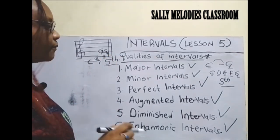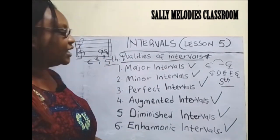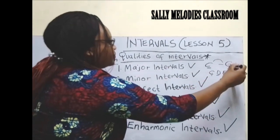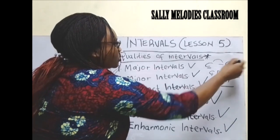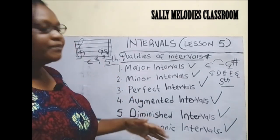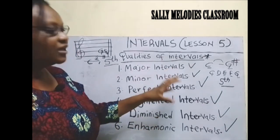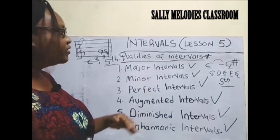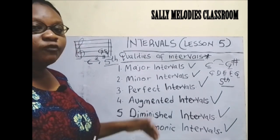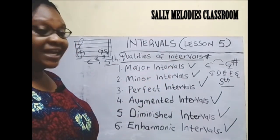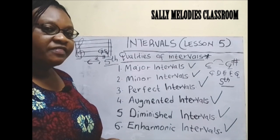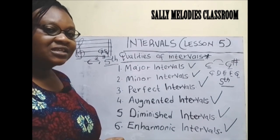But now, since every interval has got a quality, that is what we are going to be looking at. Because if, for example, the G was raised, then that fifth could be a fifth with another name — a fifth with its own quality. What kind of a fifth? That is what we are talking about. In these next six lessons, ensure that you follow me so that you are not left behind as we do each and every quality of the intervals. Thank you very much for joining this class. See you in the next class.